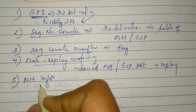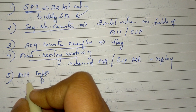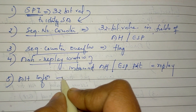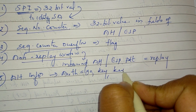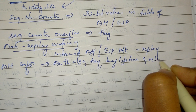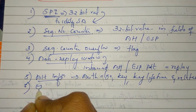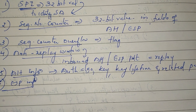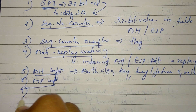The fifth parameter is Authentication Header information — including the authentication algorithm, key, key lifetime, and other parameters for AH implementation. Similarly, the sixth covers ESP information: encryption and authentication keys, initial values, lifetime, and other parameters for ESP implementation.